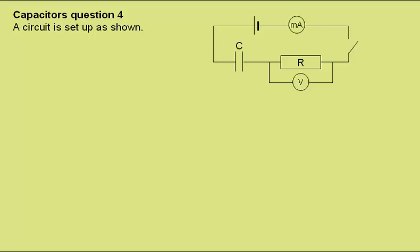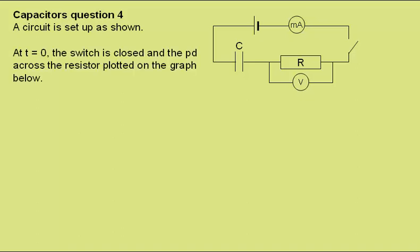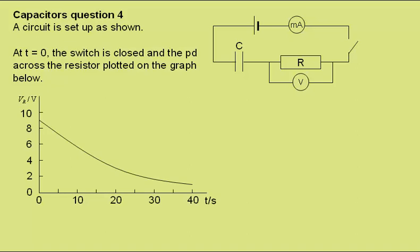Capacitors question 4. A circuit is set up as shown. At t equals 0 the switch is closed and the potential difference across the resistor plotted on the graph below. And here's the graph.